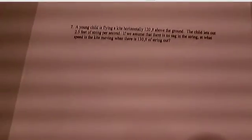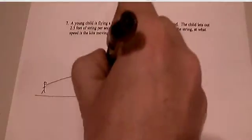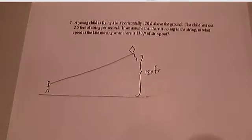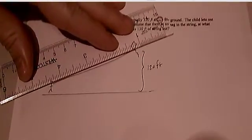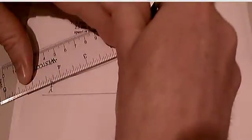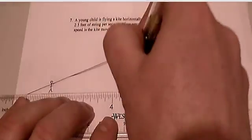This is another classic. A young child is flying a kite horizontally 120 feet above the ground. And we know that I'm not an artist. So that right there is 120 feet.